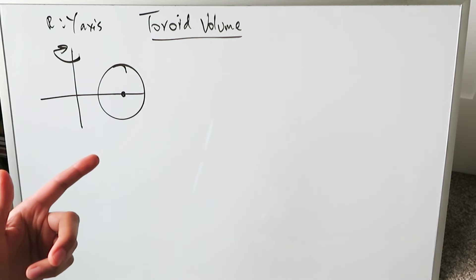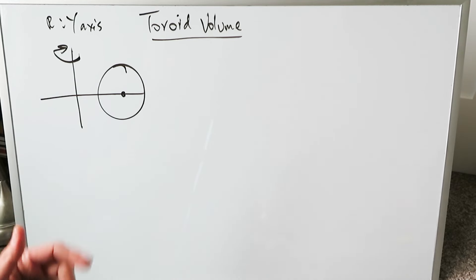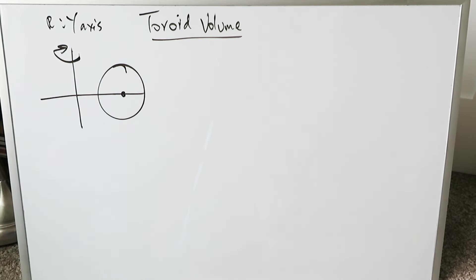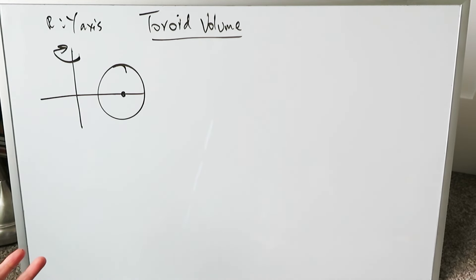In this video we are going to examine how to derive the volume of a toroid using integral calculus. The single best approach here is using cylindrical shells — a modified cylindrical shell approach.